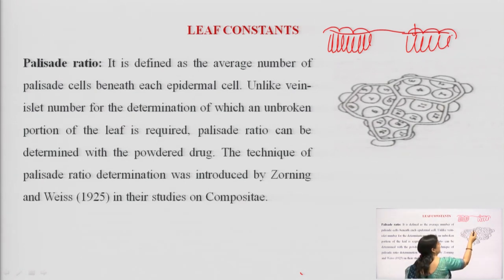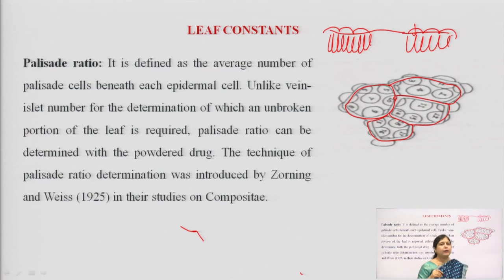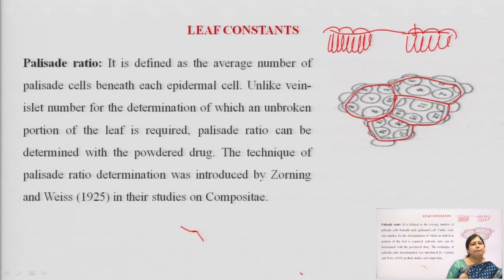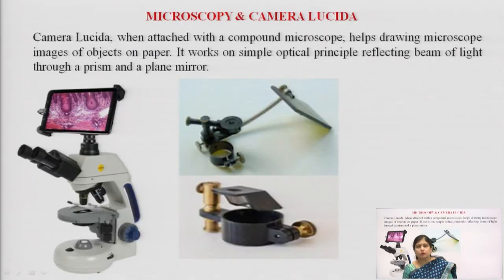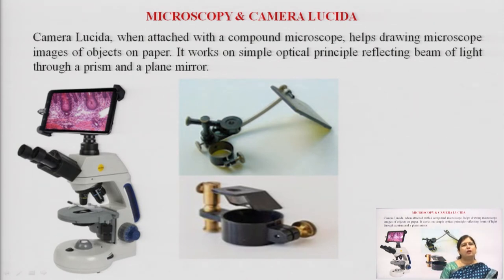In this picture you can see that we take four contiguous epidermal cells — this is the condition for determining the palisade ratio. We take groups of four epidermal cells and count how many palisade cells are present beneath them. The average number of palisade cells beneath each epidermal cell becomes the palisade ratio. These are the different types of leaf constants. To determine them, we use the camera lucida.